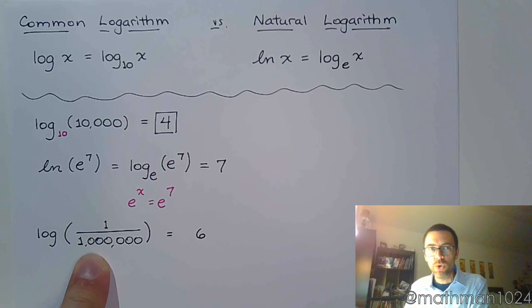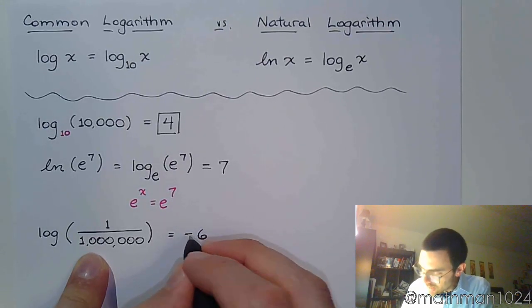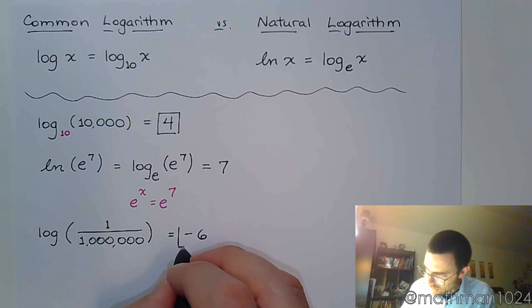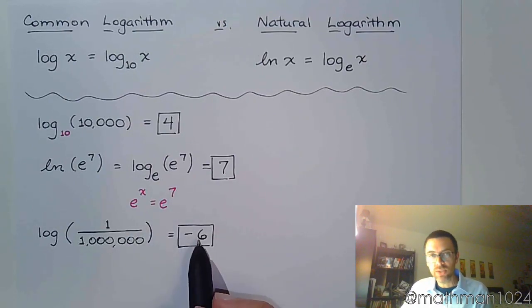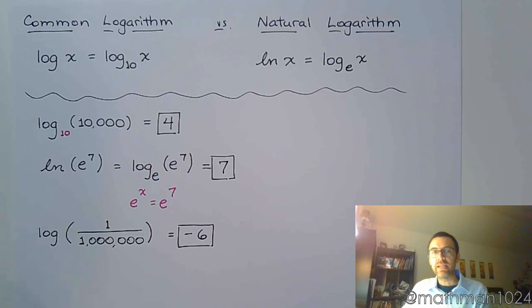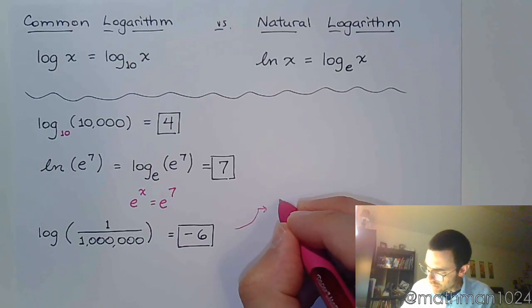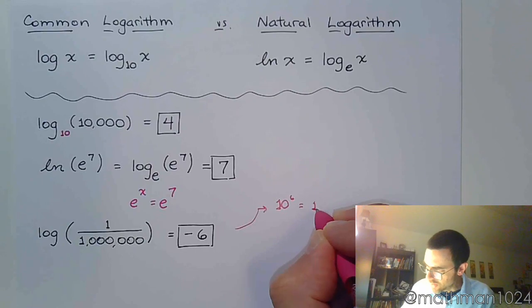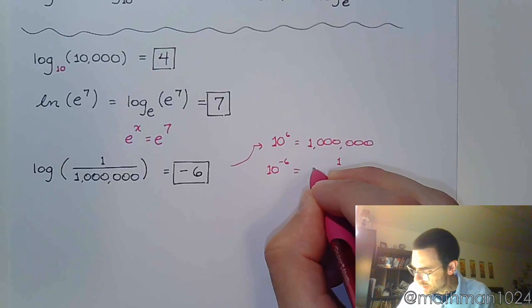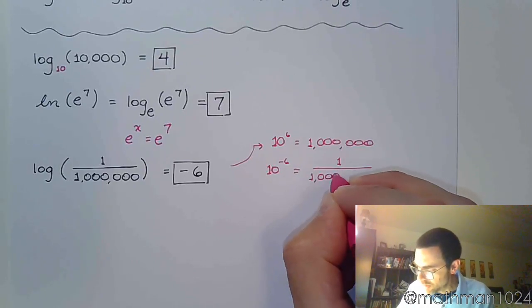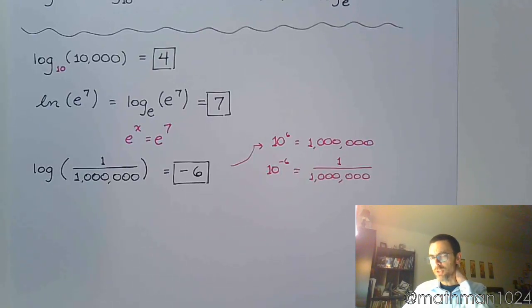But since it's in the denominator, we know that the only way it gets in the denominator is because it has a negative power. So that's the power of 10 that gives you 1 over 1 million. So 10 to the sixth is a million. 10 to the negative sixth is 1 over a million. So make sure you know how to work with these powers so you can make very quick work of these problems.